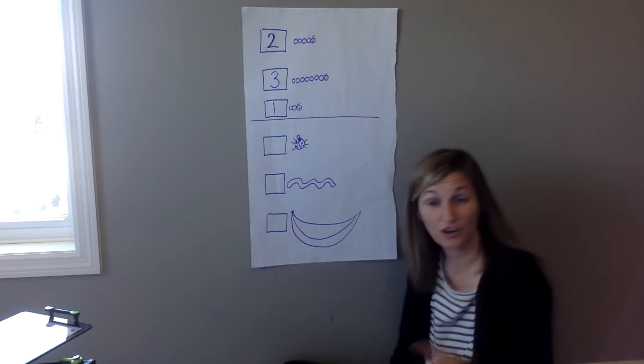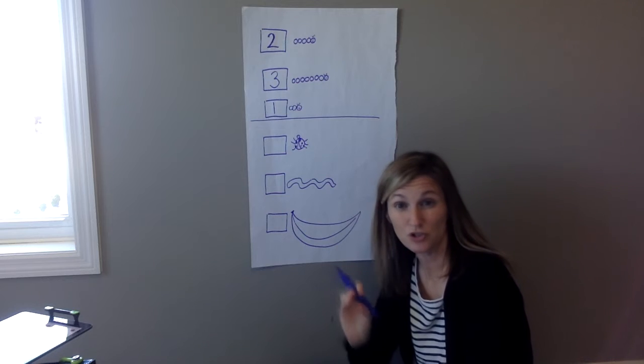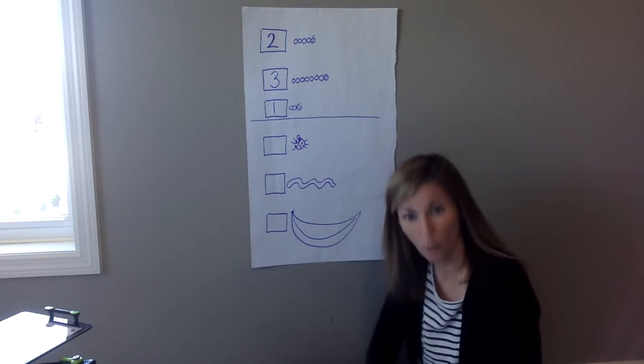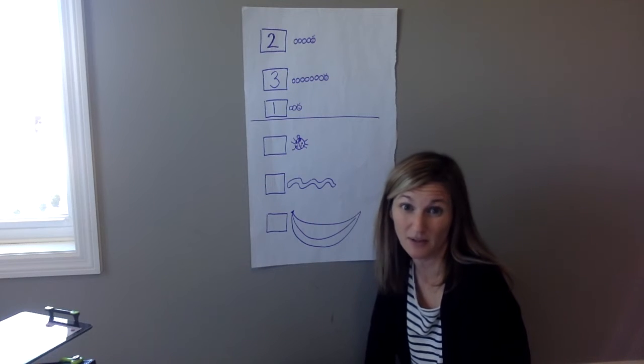Like I said, you're going to do this in Seesaw. You're going to figure out which are the longest and which are the shortest, and you're going to rank them by putting one by the shortest, two by the one that's in the middle, and three by the longest.